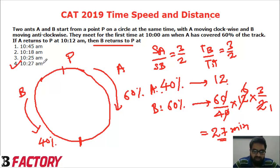Here the ratio of speed of A to B is given, which is 3 by 2. B will take 3 by 2 more time than A.